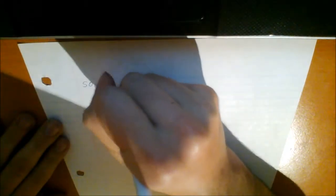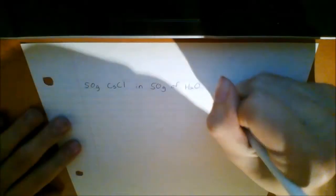Let's do an example: a solution made by dissolving 50 grams of cesium chloride in 50 grams of water. The volume of this solution is 63.3 milliliters. We need to calculate the mass percent, molarity, molality, and mole fraction of cesium chloride.